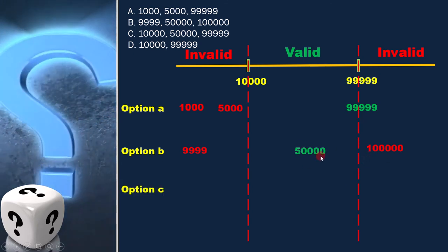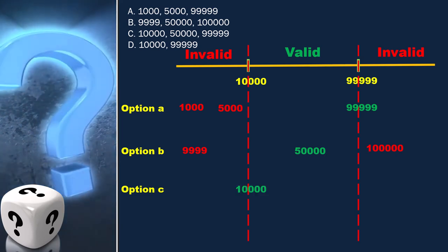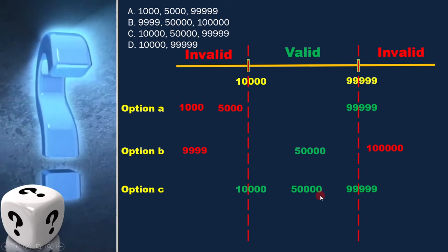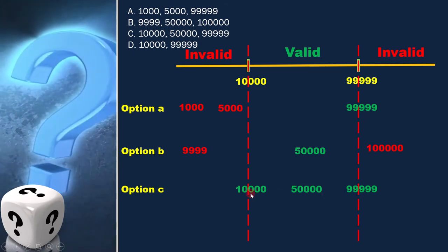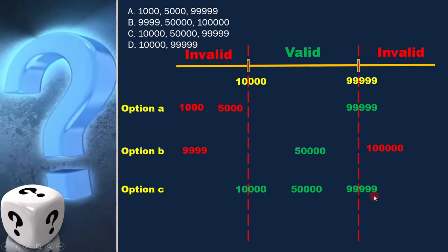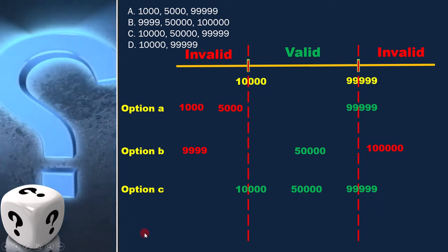Option C is 10,000, 50,000, and 99,999. Here all the options are in valid range. But before concluding let's have a look into last option too.